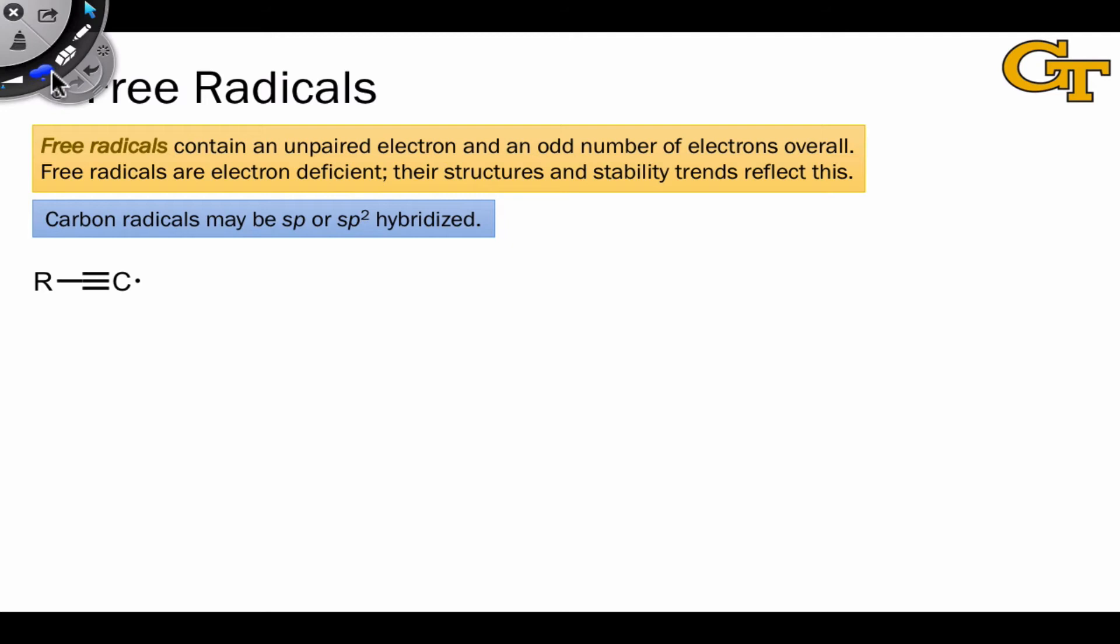Consider, for example, the alkyne radical. In this structure, the radical electron must be located in a hybrid, specifically an sp hybrid.